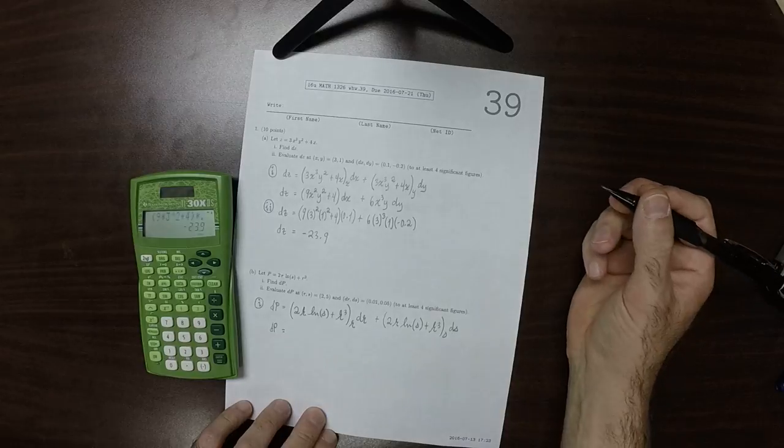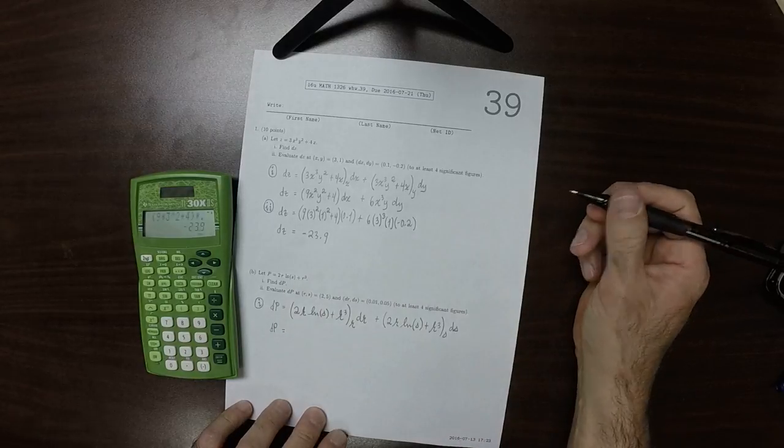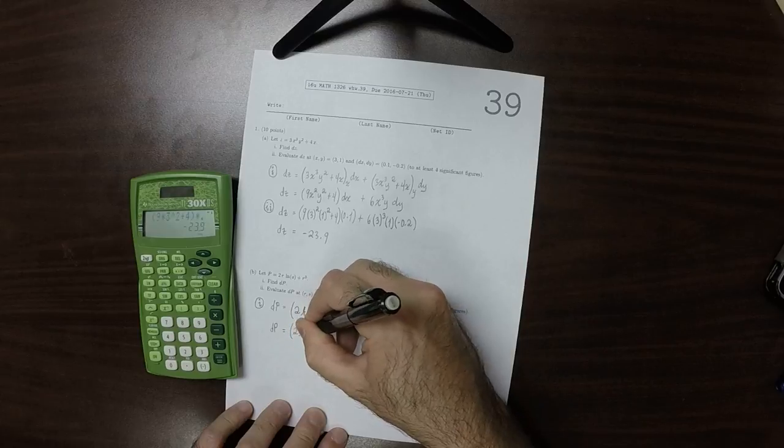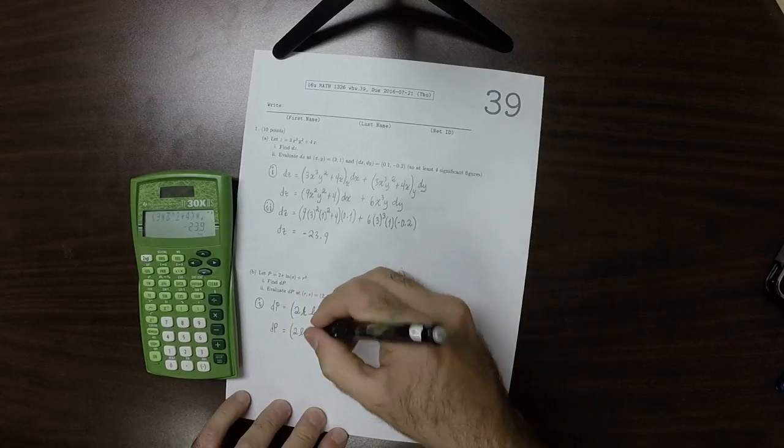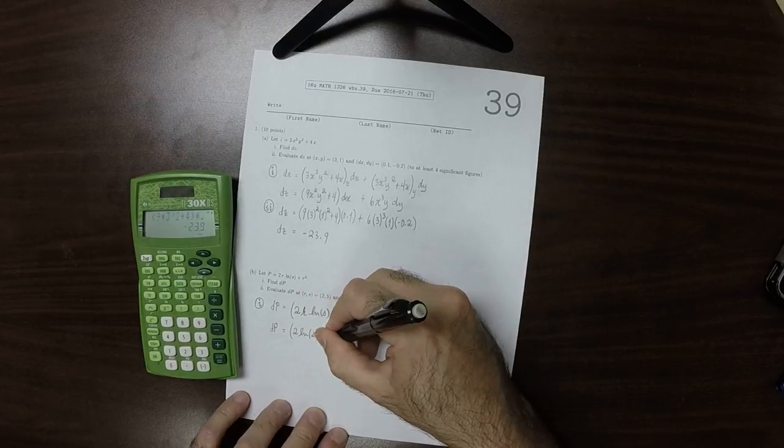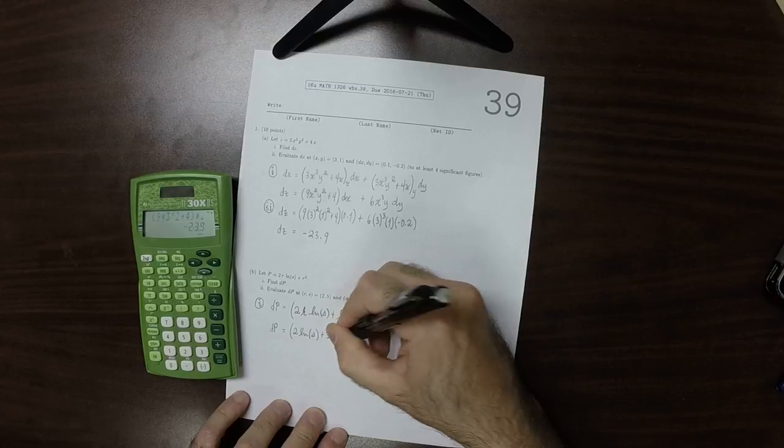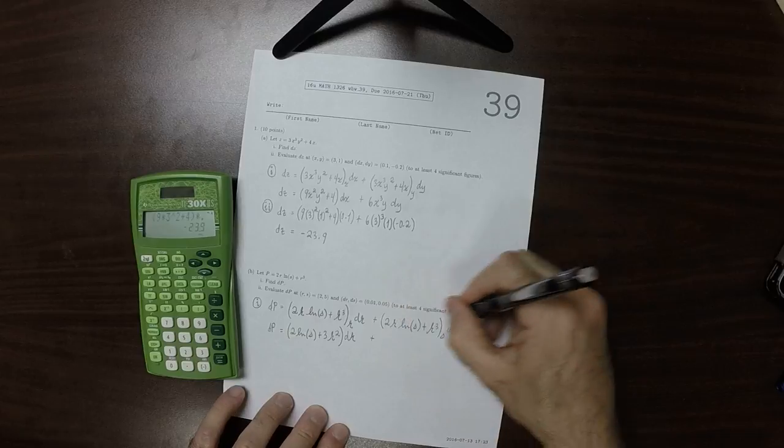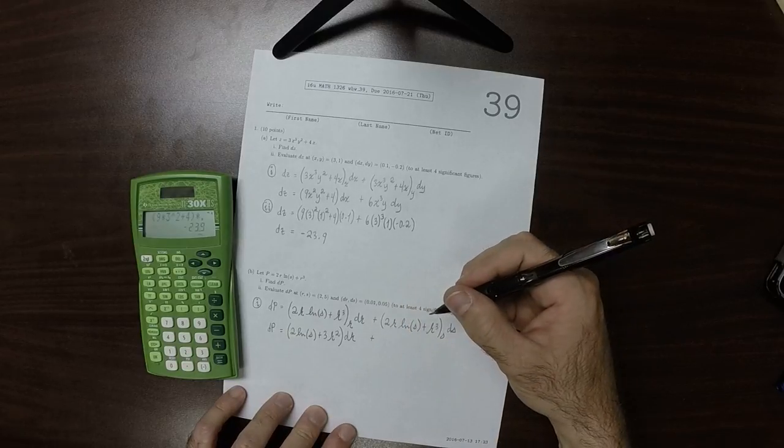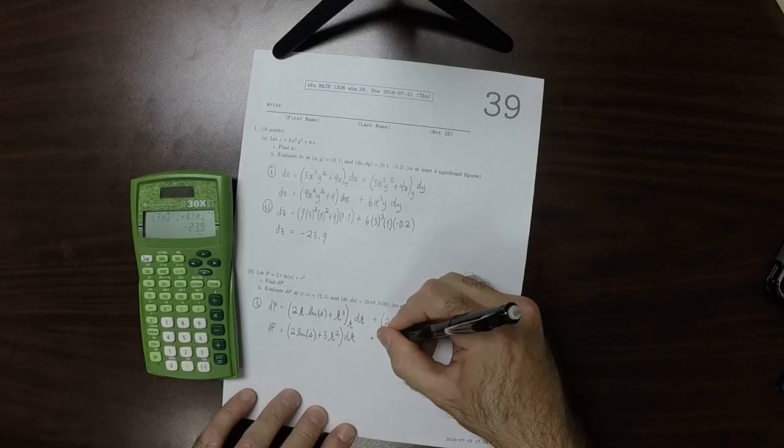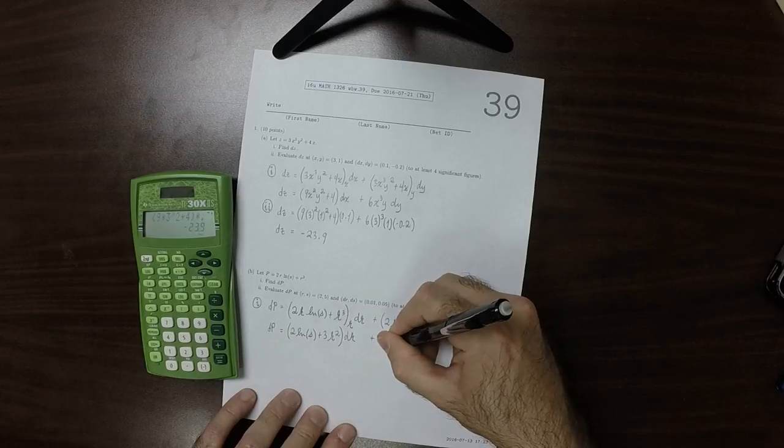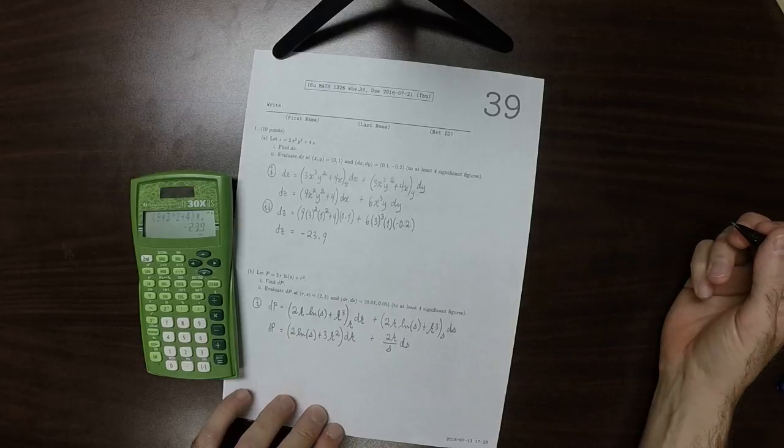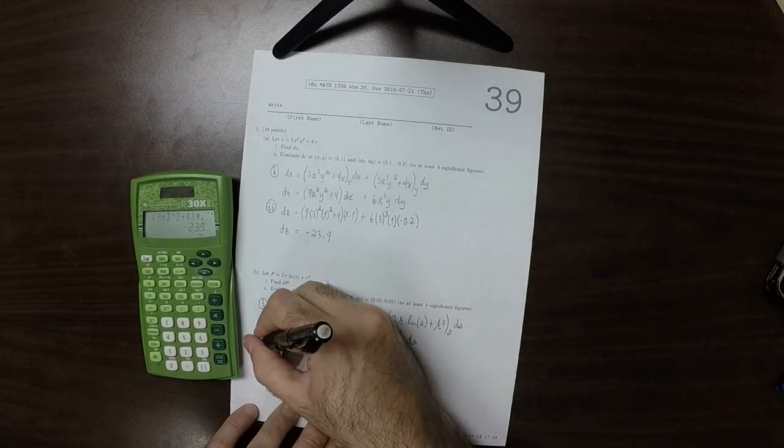So the r partial of this is 2 log s plus 3r squared times dr, plus the s partial of this is 2r over s times ds. And then part ii.